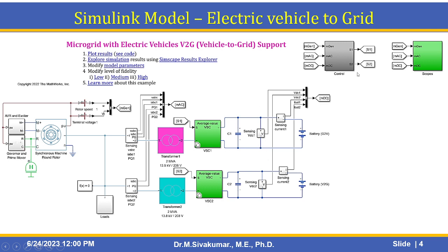There is a synchronous machine round rotor with AVR and exciter. There are some control blocks and scope blocks. Let us see the detailed Simulink model of this microgrid with electric vehicle with vehicle to grid technology.